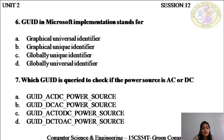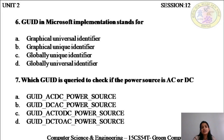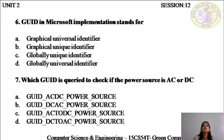The sixth one: GUID in Microsoft implementation stands for globally unique identifier, option C. It is more important to understand what these globally unique identifiers are used for. When we were talking about context awareness, we spoke about awareness of the power source. Does it benefit applications to know whether you're connected to DC power or AC? AC is a continuous power source when you plug in your laptop or phone into a charging point. DC is when you're operating on battery. The operating system provides globally unique identifiers that you can query to know whether the device is connected to AC or DC. The answer for the sixth question is C.